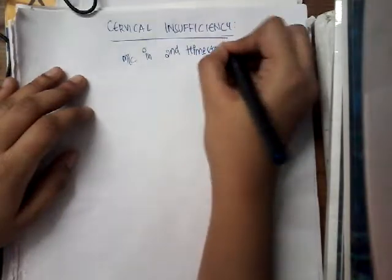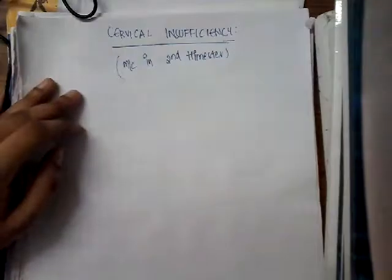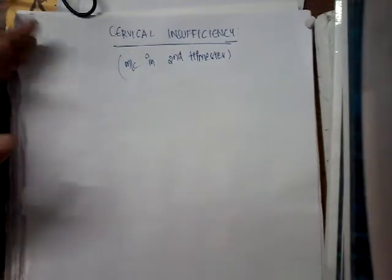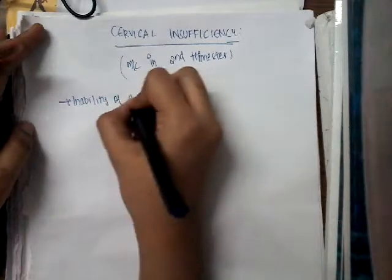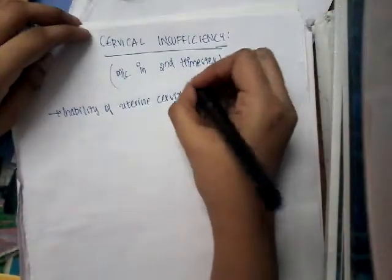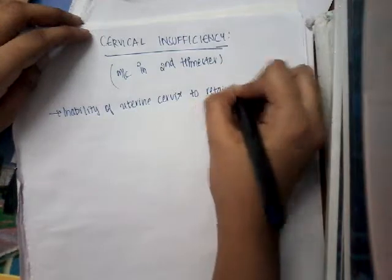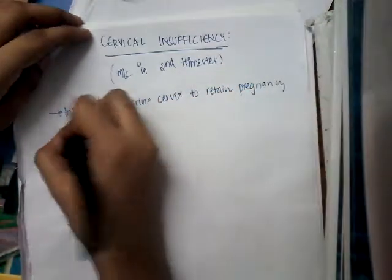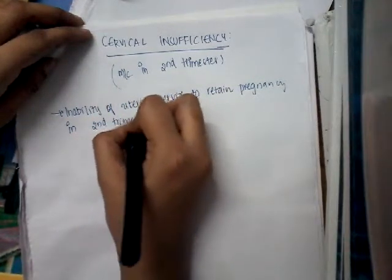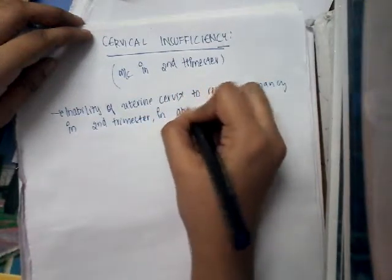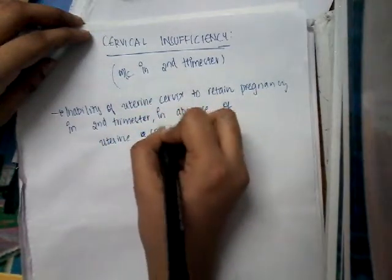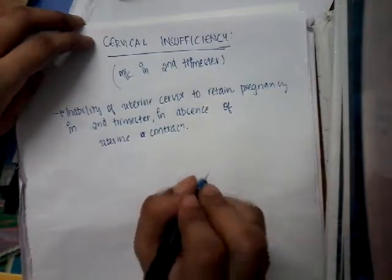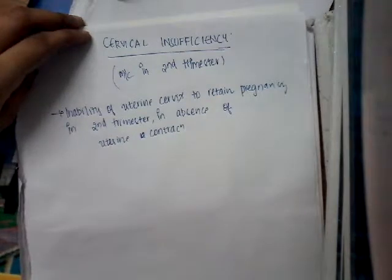Cervical insufficiency mostly always occurs in the second trimester. So what is cervical insufficiency? It is the inability of the uterine cervix to retain a pregnancy in the second trimester, in the absence of uterine contractions. If there is inability of the uterine cervix to retain the pregnancy in the second trimester in the absence of uterine contractions, then we call it cervical insufficiency.